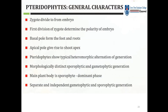The zygote divides to form the embryo. The first division of the zygote determines the polarity of the embryo — the basal pole forms the foot and roots, and the apical pole gives rise to the shoot apex. Tracheophytes show typical heteromorphic alternation of generations, with morphologically distinct sporophytic and gametophytic generations. The main plant body is the sporophyte, which is the dominant phase.